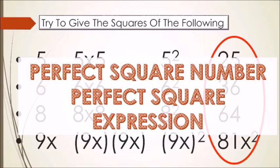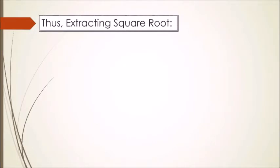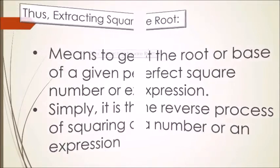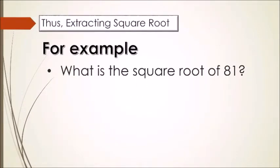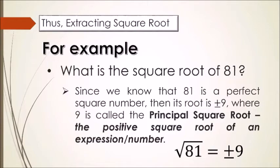Extracting square root means to get the root or base of a given perfect square number or perfect square expression. Simply, it is the reverse process of squaring a number or an expression. For example, what is the square root of 81? Since 81 is a perfect square number, its root is positive or negative 9, where 9 is called the principal square root — the positive square root. So, the square root of 81 equals ±9.